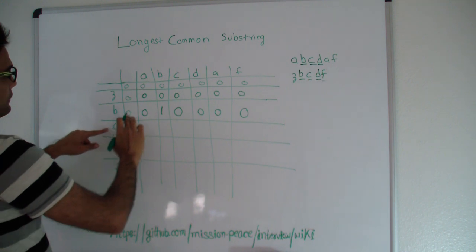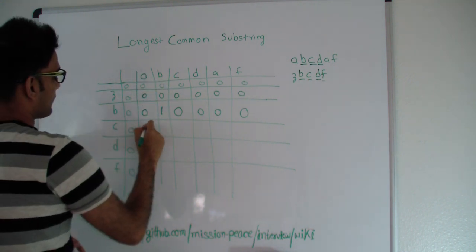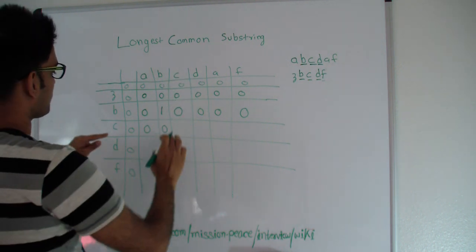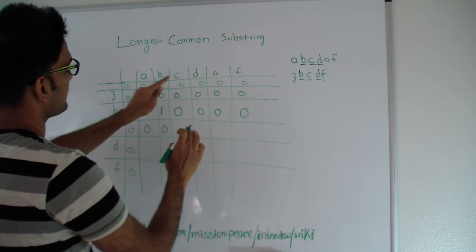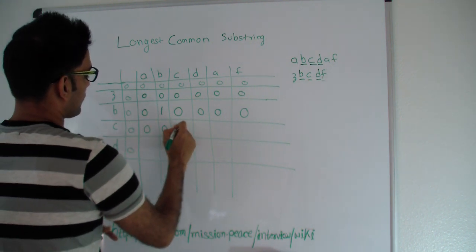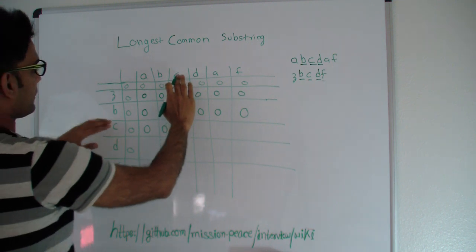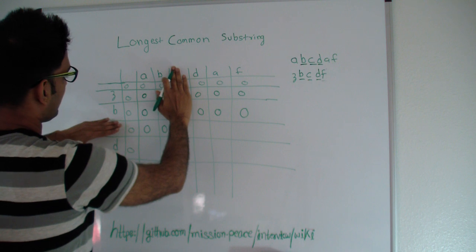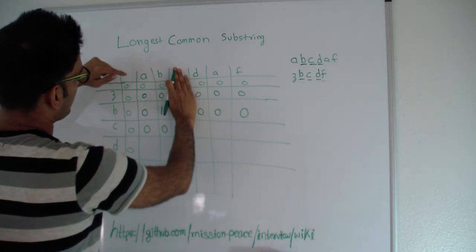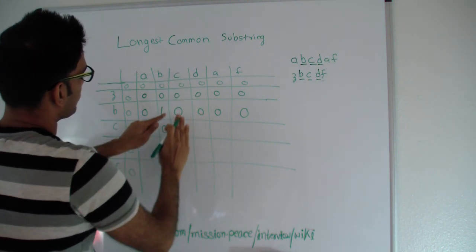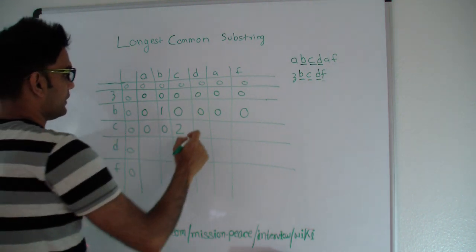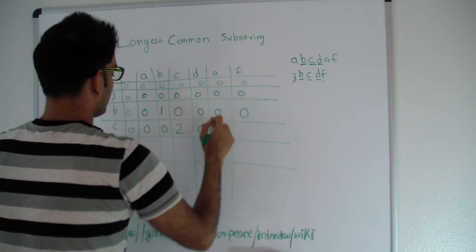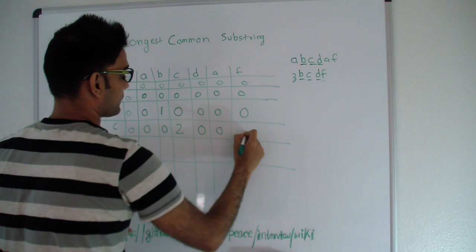Let's move to this row. A and C are not the same, so 0. B and C are not the same, so 0. Here C and C are the same, so the longest common substring between Z, B, C and A, B, C is 1 plus what is diagonally across, so 2. We remove C from the picture because C is already contributing 1, then we look at the longest common substring between A, B and Z, B, which is 1. So 1 plus 1 equals 2. D and C are different so 0. A and C are different so 0. F and C are different so 0.